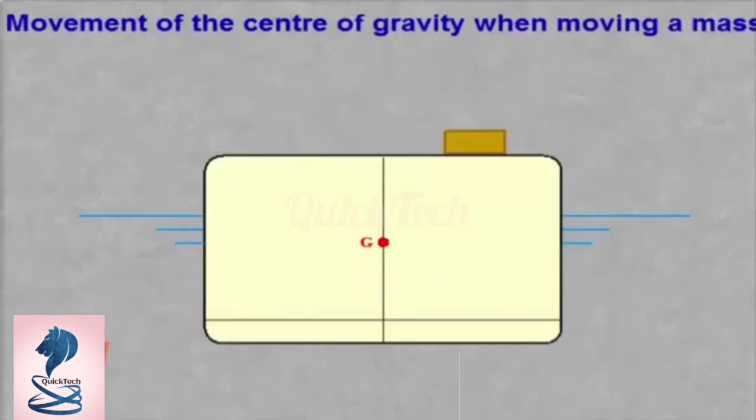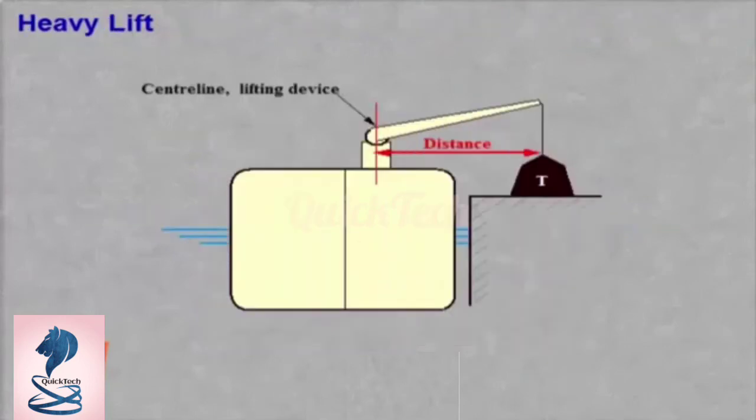When calculating heavy lift, the principles are the same as when adding a mass. The arm used to calculate the heeling moment is now the same as the transverse distance from the centre line to the end of the lifting gear.